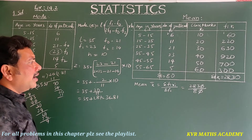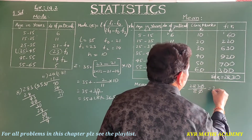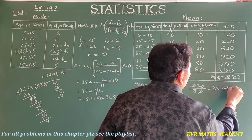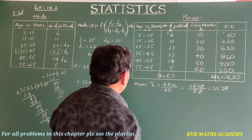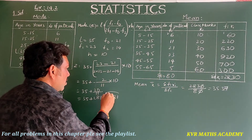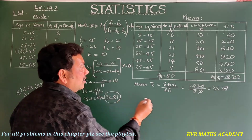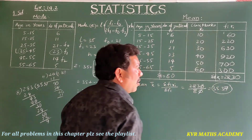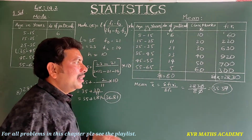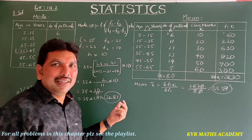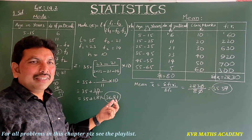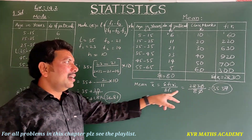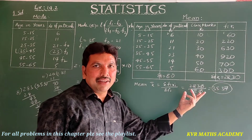Dividing 283 by 8 gives 35.37. So the mean is 35.37. To summarize: mode is 36.81 and mean is 35.37.